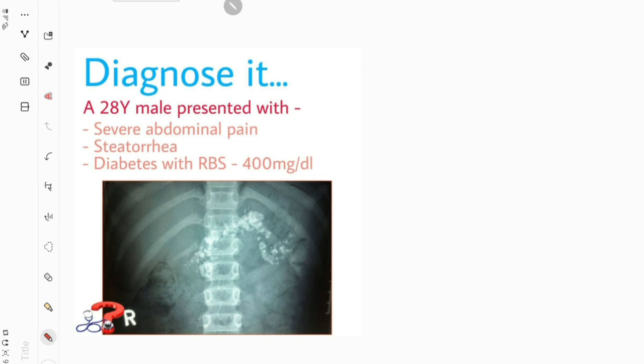This is a virtual case, but let's assume how this patient would have presented to us. A 28-year-old male, very thin built and malnourished-looking man, presented with severe abdominal pain to our emergency department. On stabilizing the patient and taking history, we learned that he had developed this kind of severe abdominal pain earlier as well, and he also complained of a dull aching pain that was continuous throughout the interval between episodes.